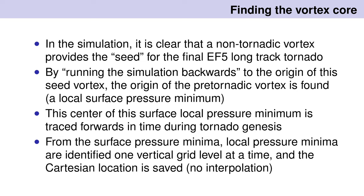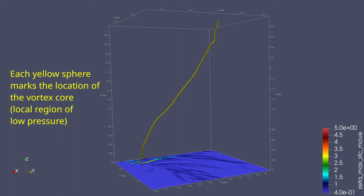There's no interpolation done here. I save the Cartesian locations of all the vortex core locations so I can go back and calculate or show other things along the vortex. And this is what it looks like when you're done — those yellow spheres all indicate the center of the vortex core.